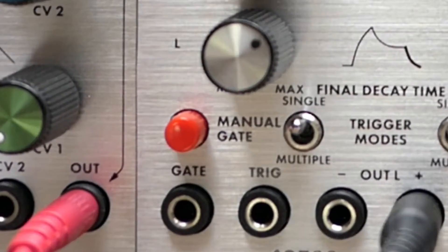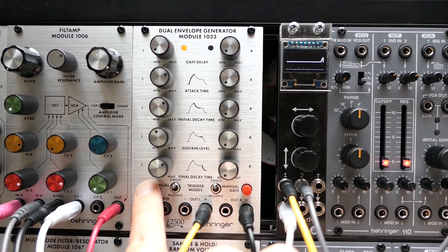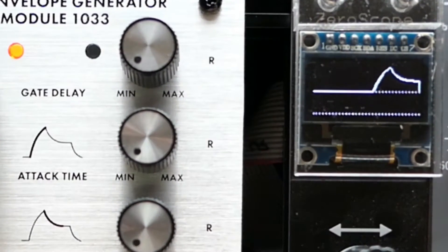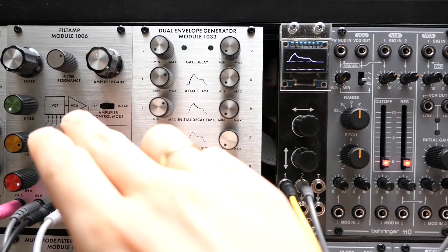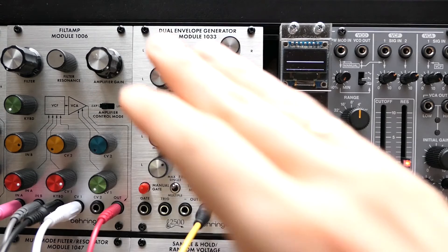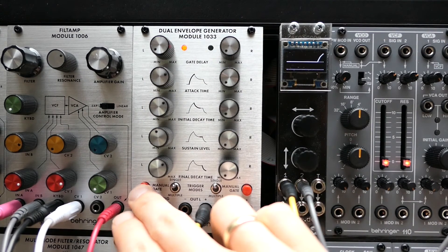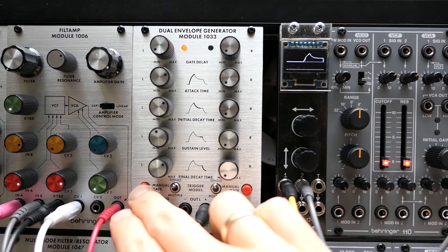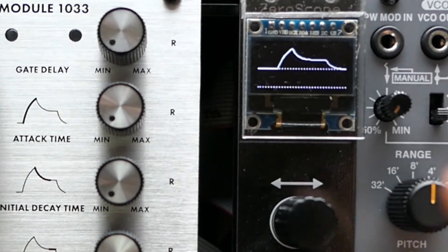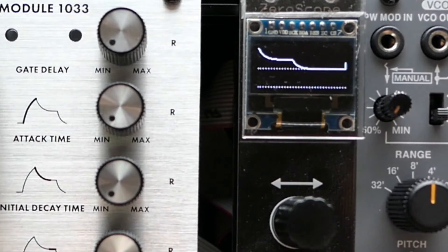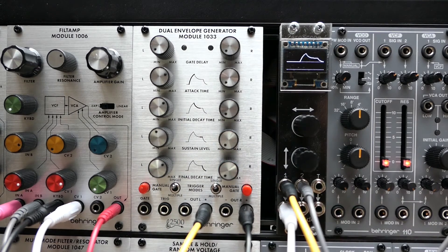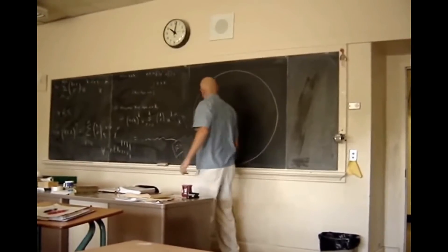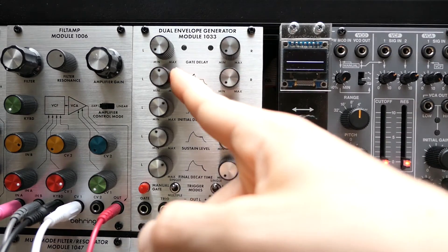Both envelopes have a manual gate button, and when we push it we can hear and see in the scope that the envelope runs through its phases — in my simple setup here, it modulates a filter cutoff frequency. The envelope of the 1033 module is exponential, meaning the slopes flatten a bit when they reach their end points. Exponential envelopes are more handy for modulating filter cutoffs or amplifier gains as they often yield a more pleasing result, unlike non-exponential envelopes which have perfectly linear slopes.